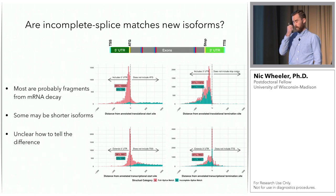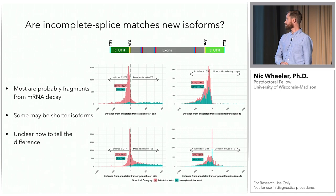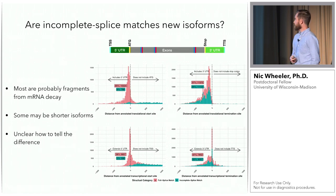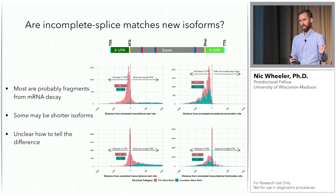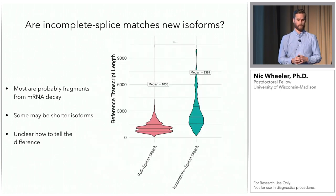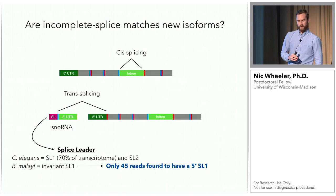A big question I had is: are the incomplete splice matches new isoforms or just degraded mRNA? I looked at whether full splice matches and incomplete splice matches included or extended the annotated five prime or three prime UTR. For full splice matches — shown in pink — most included and extended five prime UTR. For incomplete splice matches, most included three prime UTR but not five prime UTR. That's a really good suggestion that we're getting five prime degradation, so those probably aren't true isoforms. Another bit of evidence is that the incomplete splice matches have significantly longer reference lengths, suggesting longer transcripts are degrading more.